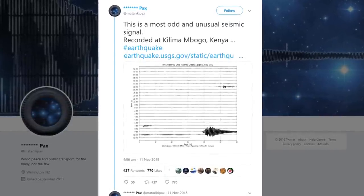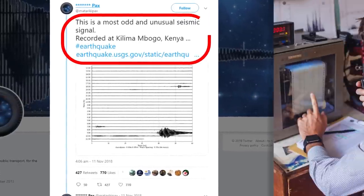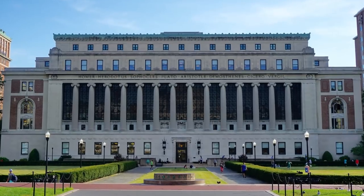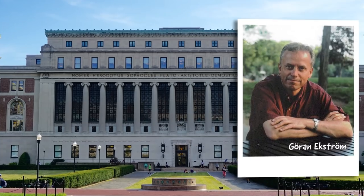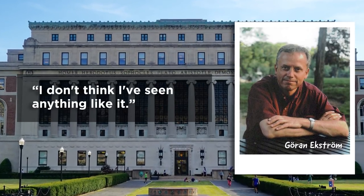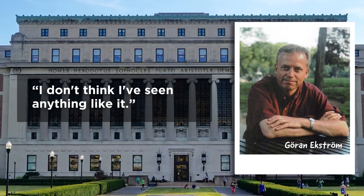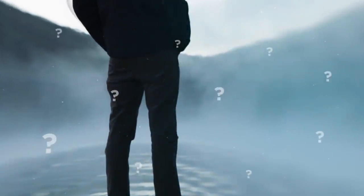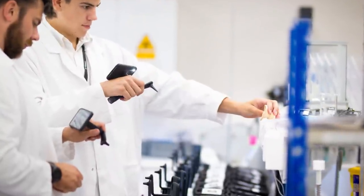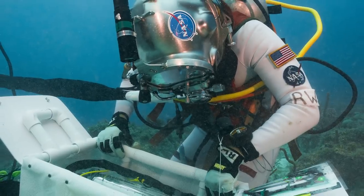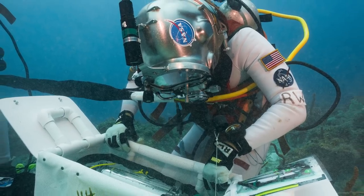This now viral post sent seismologists around the globe into a frenzy as they tried to figure out this geological mystery. Seismologist at Columbia University, Goran Ekstrom, was quoted as saying, 'I don't think I've seen anything like it.' A bold statement from an expert who has studied thousands upon thousands of seismic waves. So what the heck happened? Have any of the experts come up with a theory about what could have caused these peculiar waves?